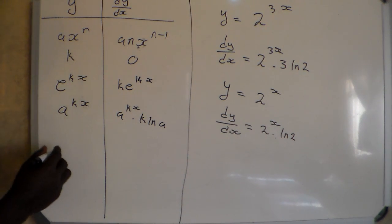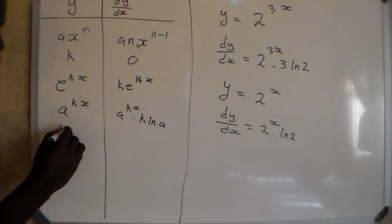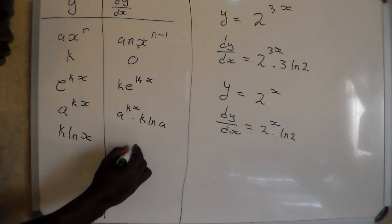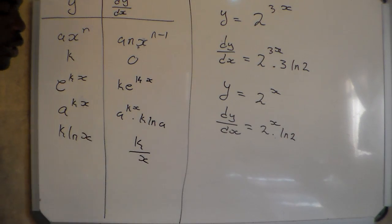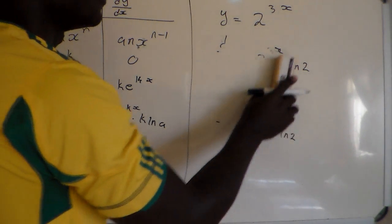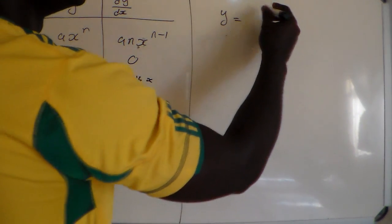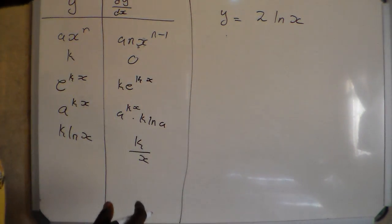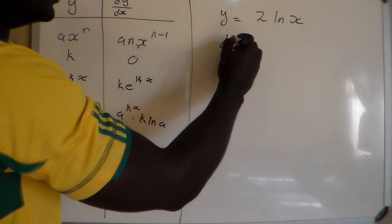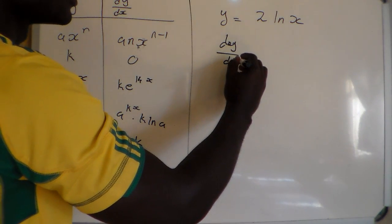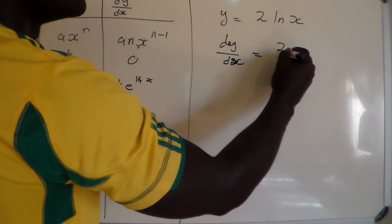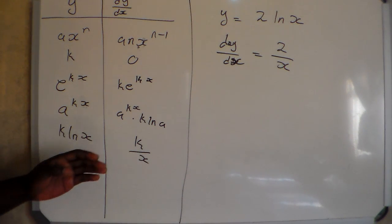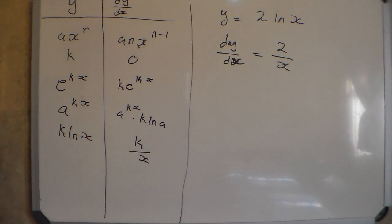If we have k·ln(x), the derivative of k·ln(x) is equal to k over x. For example, if we have to derive 2·ln(x), then dy/dx will be equal to 2 over x. The derivative of k·ln(a·x) equals k over x·ln(a) where a is the constant.